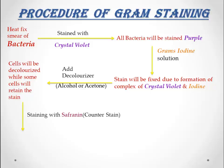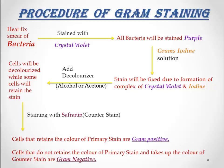After the application of safranin, observe the slide under the oil immersion lens in a microscope. In the microscopic observation, the cells that retain the color of the primary stain are gram positive bacteria, and the cells that do not retain the color of the primary stain and instead accept the color of the counter stain, safranin, are gram negative bacteria.